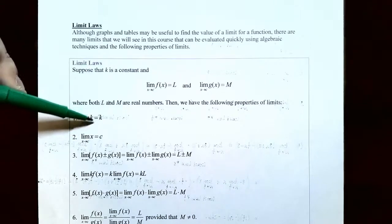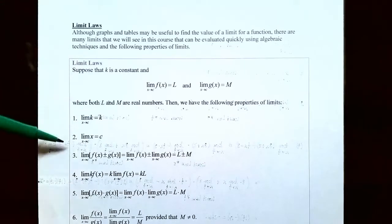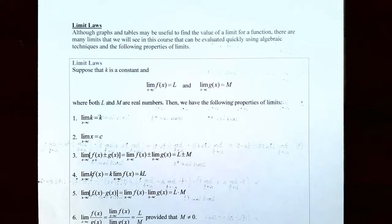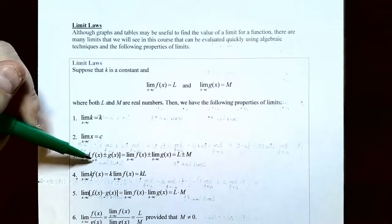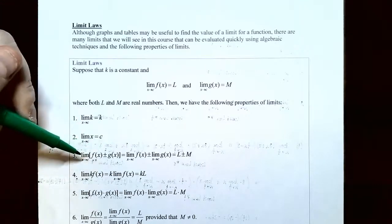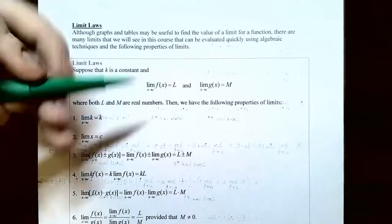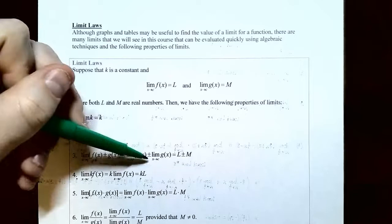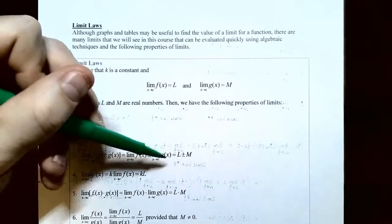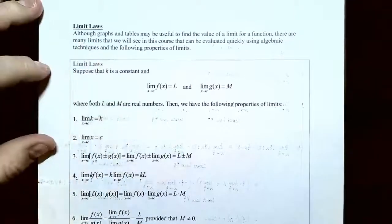If it's just a real number you're taking the limit of, the limit is just that number. Property two: if the function is just x — so f(x) = x — and the x values are approaching c, then the y values also approach c. Property three, which we'll use very often: the limit of a sum or difference of two functions. If you have a function with many terms separated by pluses or minuses, you can find the limit of each term separately and keep the sign between the limits. So you get L plus or minus M.